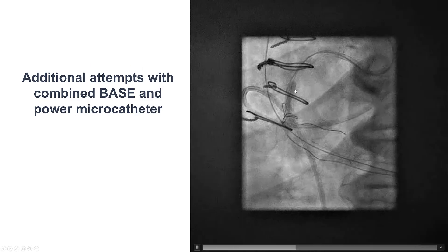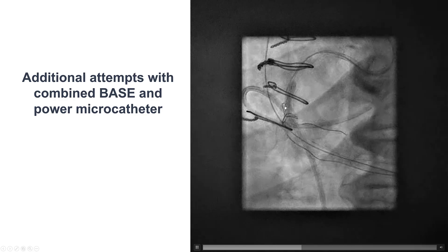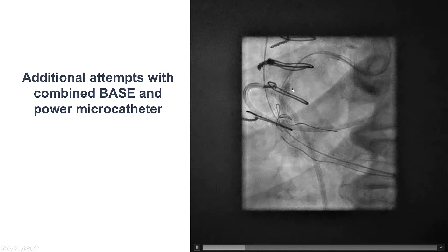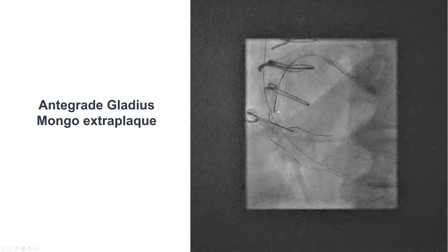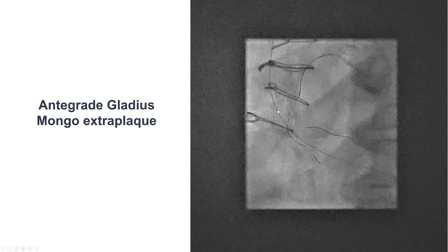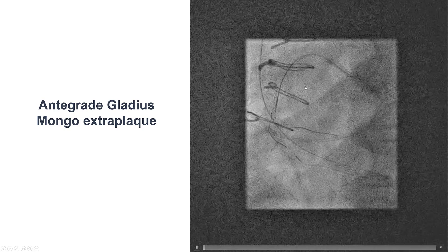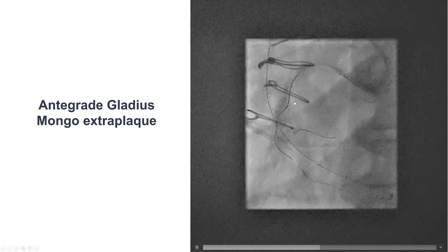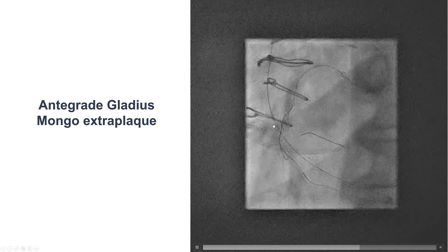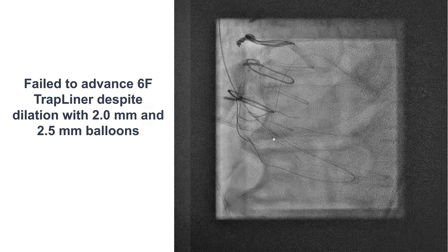We used the BASE technique again with an antegrade microcatheter, attempting to direct the wire into the extraplural space without success. But then eventually, using multiple balloon inflations, we were able to advance a Gladius Mongo antegrade wire next to the retrograde guide wire into the extraplural space.